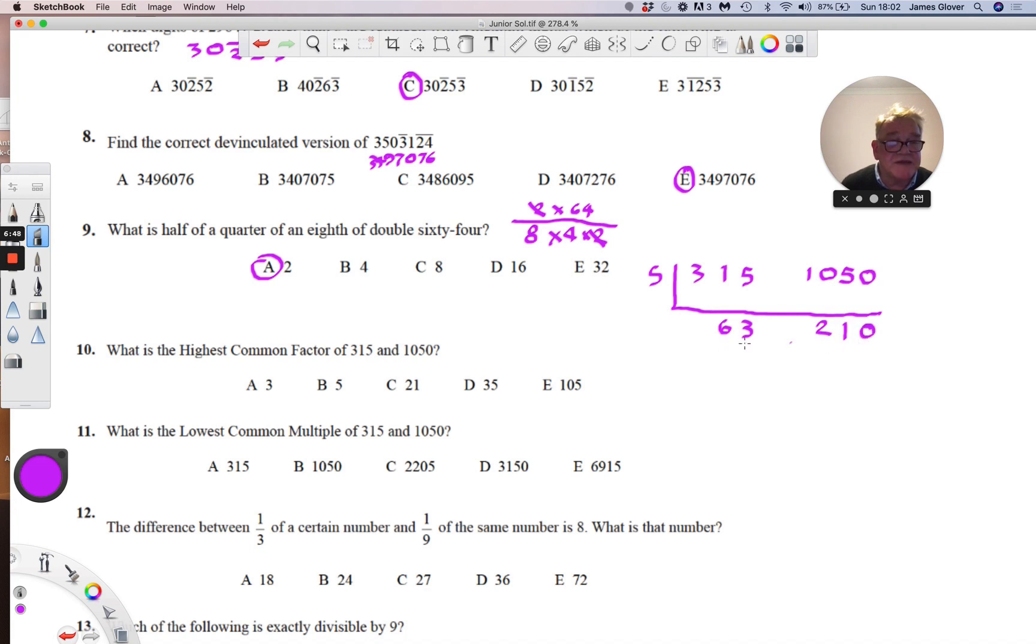On inspecting these we can see that 7 goes into both of these, so we divide by 7, giving 9 and 30. And 3 goes into both of these, giving 3 and 10.